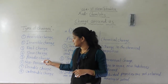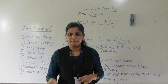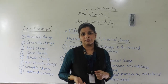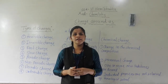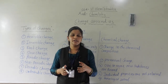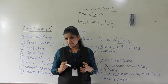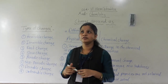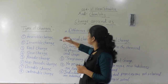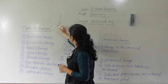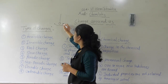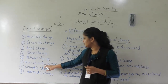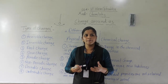Periodic change means the change occurs after a certain period of time and it keeps repeating. For example, day and night continuously changing — that happens because of the revolution of the Earth. Also, the pendulum in a clock continuously moves in a to-and-fro motion and the time period is fixed. So that is also an example of periodic change.